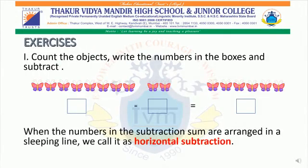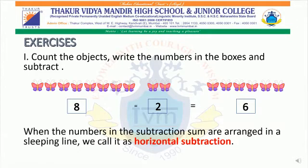Students, get ready with your books and pencils. It's time to solve a few exercises. Count the objects, write the numbers in the boxes, and subtract. 8 butterflies minus 2 butterflies is equal to 6 butterflies. When the numbers in the subtraction sum are arranged in a sleeping line, we call it horizontal subtraction.